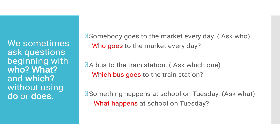So, this is an example of who: 'Somebody goes to the market every day.' If we frame a question with who, the answer is: 'Who goes to the market every day?' Here is another example with which: 'A bus goes to the train station.' The question becomes: 'Which bus goes to the train station?'